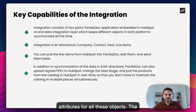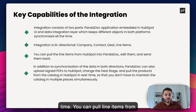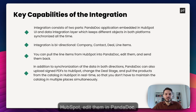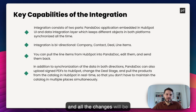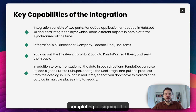The most robust part is the integration of line items, which happens in real-time. You can pull line items from HubSpot, edit them in PandaDoc, and all the changes will be transferred back to HubSpot, either when you're saving the quote in PandaDoc or when you're completing or signing the document.